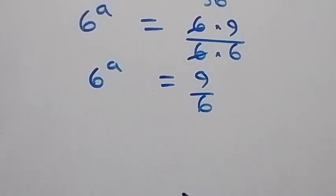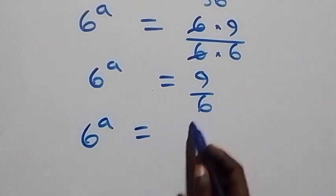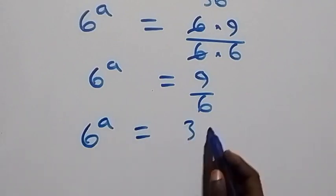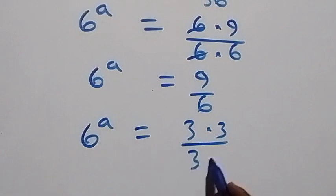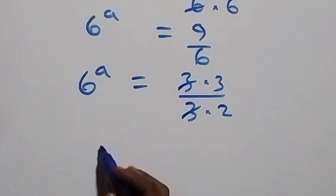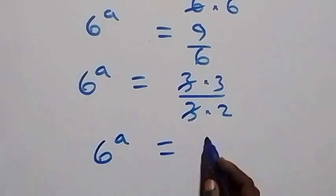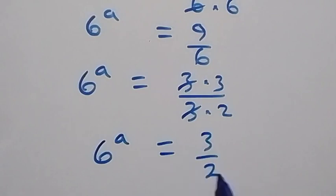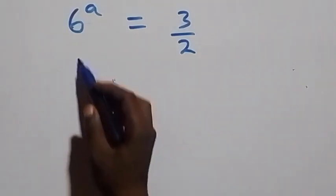We can also write this as 6 raised to power a equals 9 written as 3 times 3, and 6 written as 3 times 2. Then 3 cancels each other, and we have 6 raised to power a now equals 3 over 2.